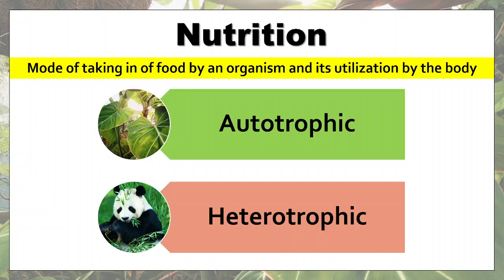Autotrophic organisms are those which can synthesize their food using certain raw materials present in their environment. Autotrophs require energy to synthesize their own food. An analogy would be cooking your favorite dish in the kitchen — for example, cooking noodles. If you take noodles and water and keep them in a pan, the noodles won't cook by themselves. You need to turn on the gas because that heat energy is what cooks the food. Similarly, autotrophs require a source of energy so that they can cook their own food.